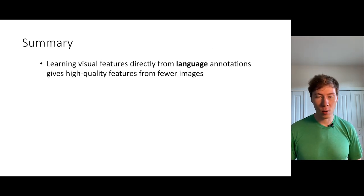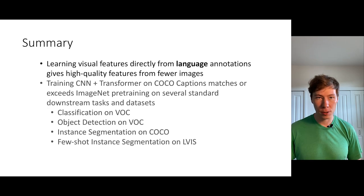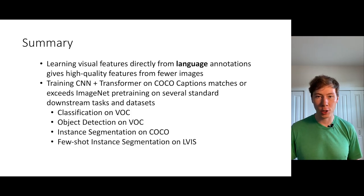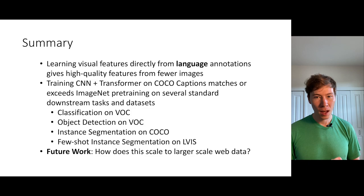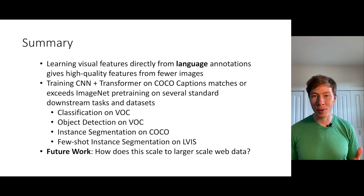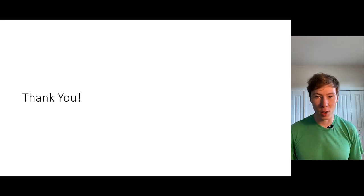In summary, we showed that we can learn high-quality visual features directly from language annotations in a very data-efficient manner using very few images. In particular, we showed that CNN plus Transformer models trained from scratch to perform captioning on COCO can match or exceed supervised ImageNet pre-training on a whole host of standard downstream visual recognition tasks, even though we train with 10x fewer images. The really exciting piece of future work is the question of how well this approach would scale up to larger web-scale data. Thanks for paying attention, and I'll be happy to answer questions during the Q&A session.